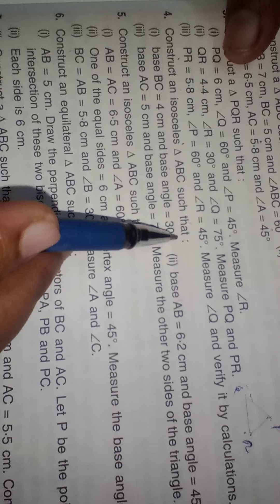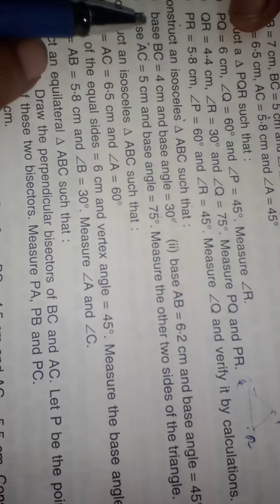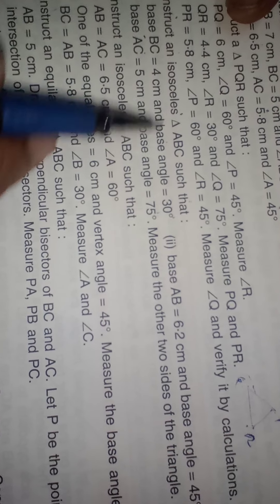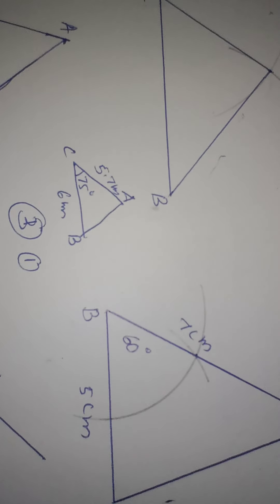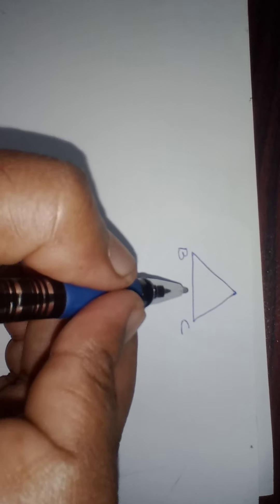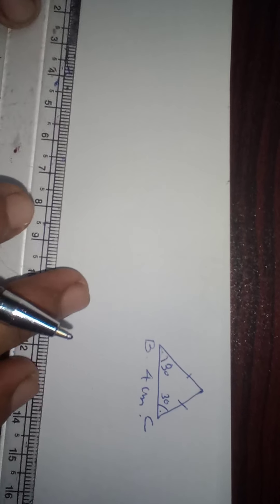This is a very important section. Construct an isosceles triangle ABC such that the base is 4 cm and the base angle is 30 degrees. For an isosceles triangle, base angles must be equal — so both base angles are 30 degrees. Draw the rough figure: BC is the base at 4 cm, and since it is isosceles, both angles B and C are 30 degrees.